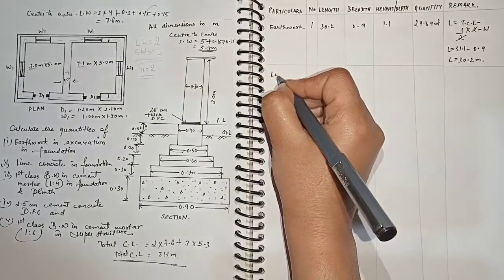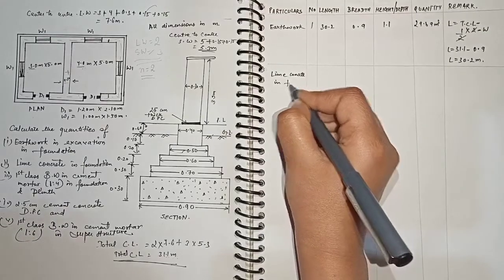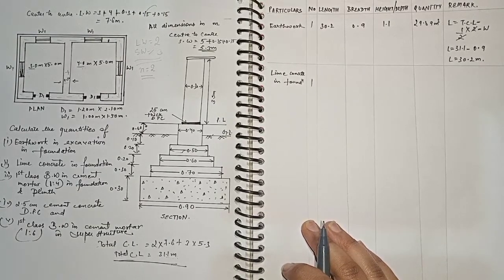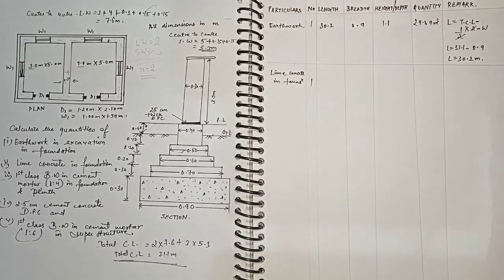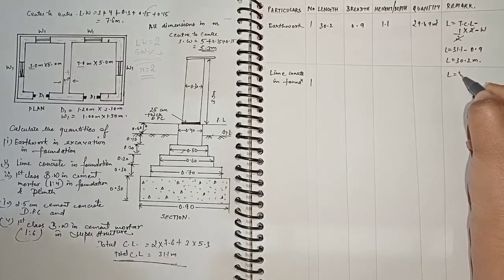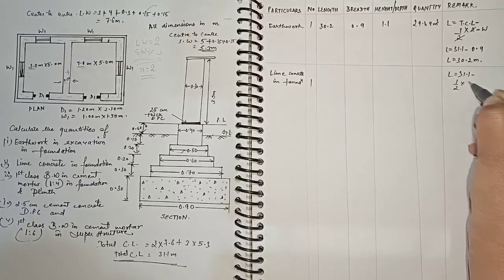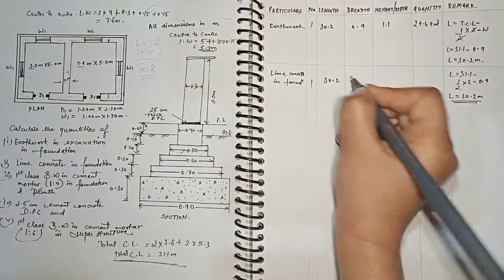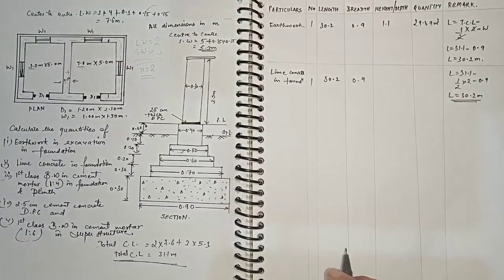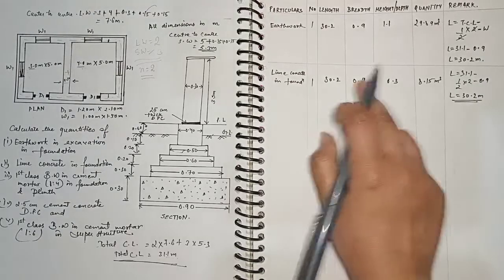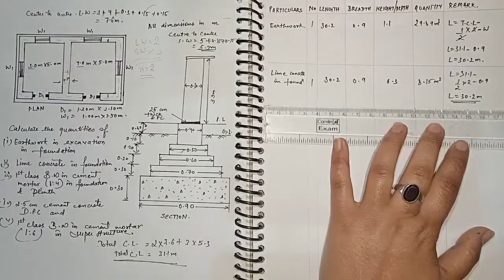Now we calculate lime concrete in foundation. The length calculation follows the same approach: total center line length minus half the width times junctions. Width of foundation is 0.9m, so length is again 30.2 meters. Breadth is 0.9m and depth is 0.3m. Quantity = 30.2 × 0.9 × 0.3 = 8.15 cubic meters.